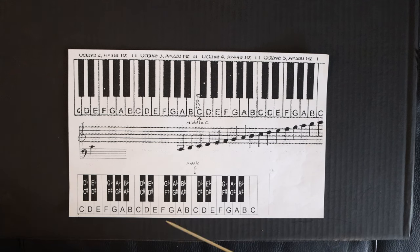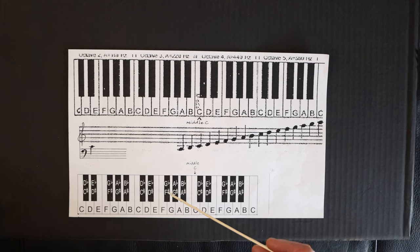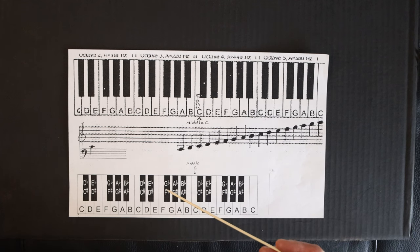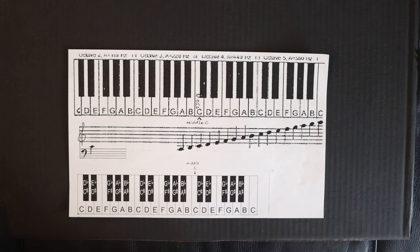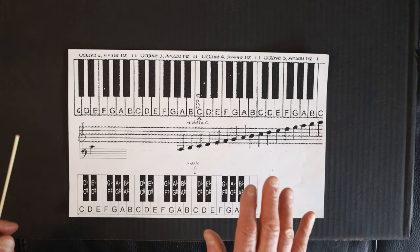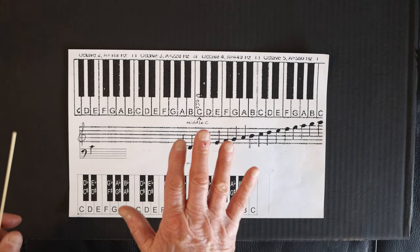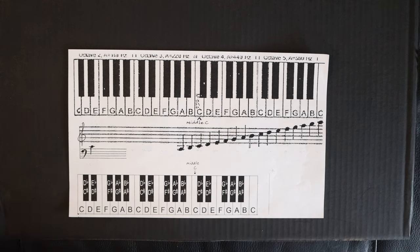A sharp symbol tells you to go up from the named white key and hit the very next black key — for example, F to F sharp. A flat symbol tells you to go down from the named white key to the very next black key — for example, G to G flat. Here's a word trick to help you remember: when you want to cause an object to lay flat, you always lay it down. Remember, flat is always down.